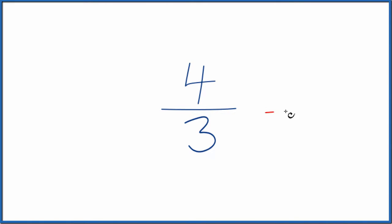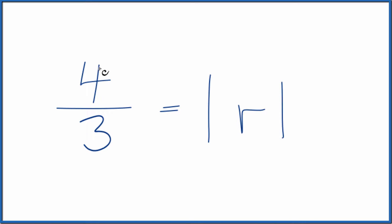So what we'll do is we'll divide four by three, and three goes into four one time, and the remainder is one. So the fraction four-thirds gives us one remainder one.